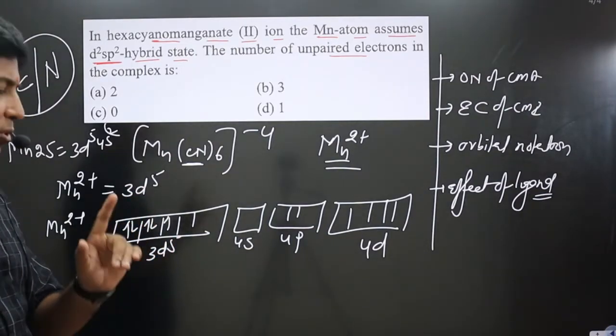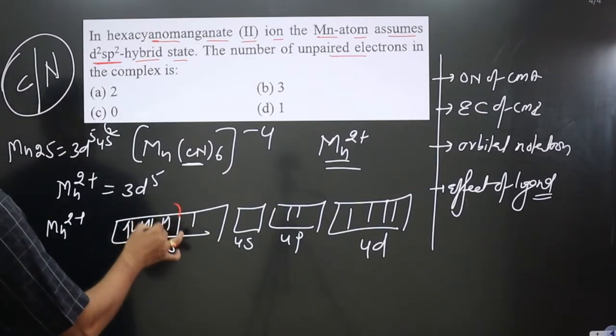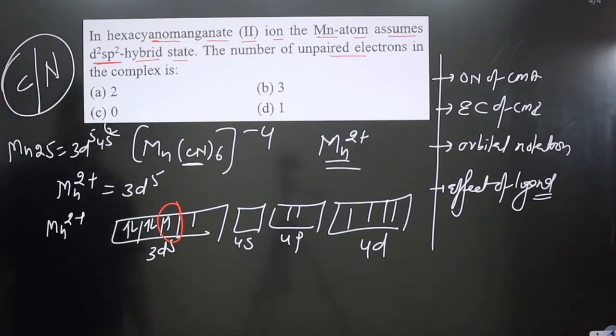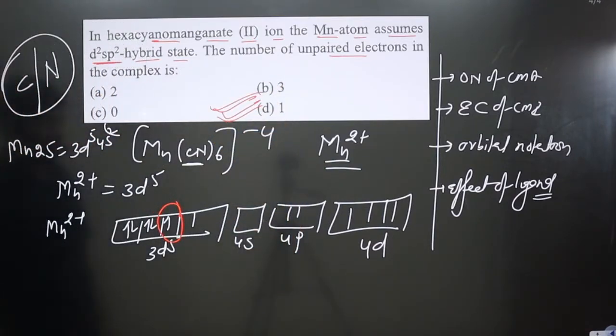It is not asking about geometry or hybridization, only how many unpaired electrons are there. You can see it has only one unpaired electron. Option D is correct—it has only one unpaired electron. If you like this video, please share and subscribe to the channel.